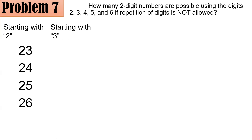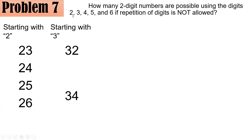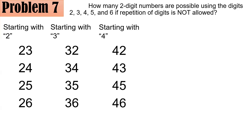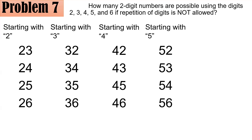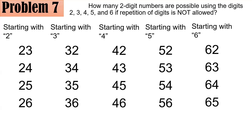Those that begin with 2: four options. Those beginning with 3: 32, 34, 35, 36 — four options. Beginning with 4: 42, 43, 45, 46 — four options. Beginning with 5: 52, 53, 54, 56 — four options. And beginning with 6: 62, 63, 64, 65 — four options. So there are five groups of four, and five times four gives you 20.